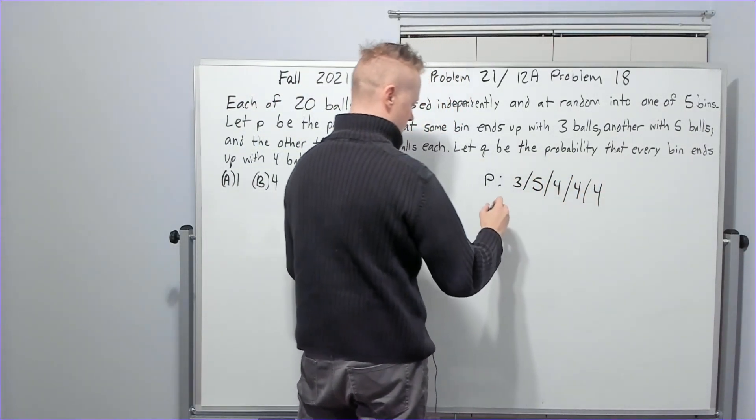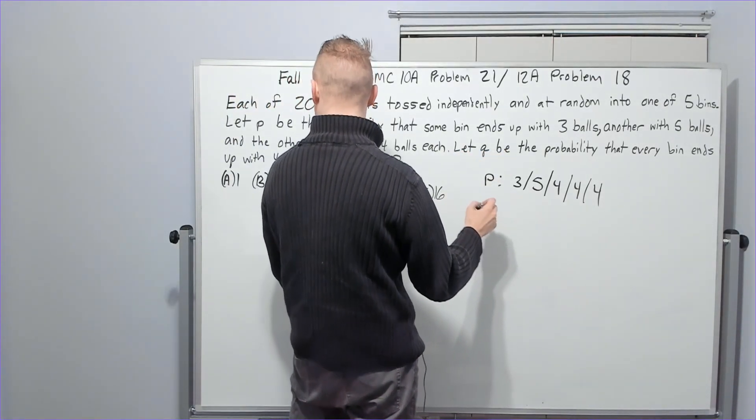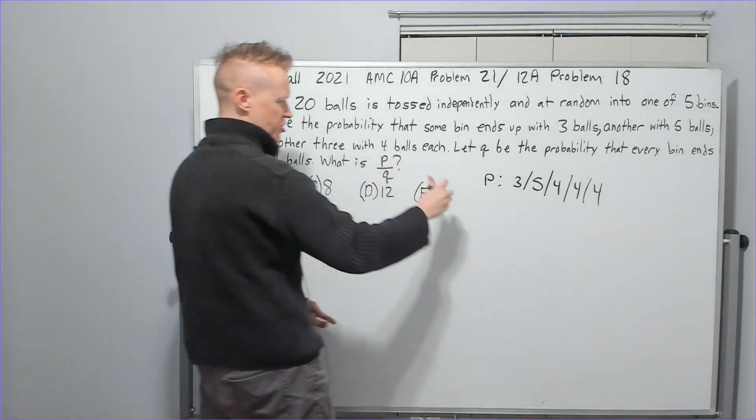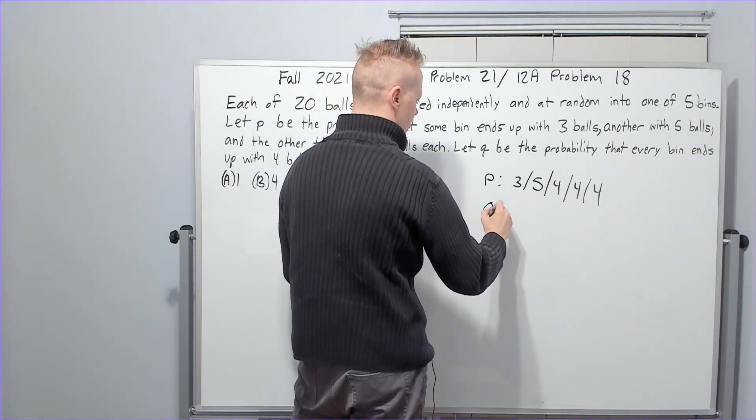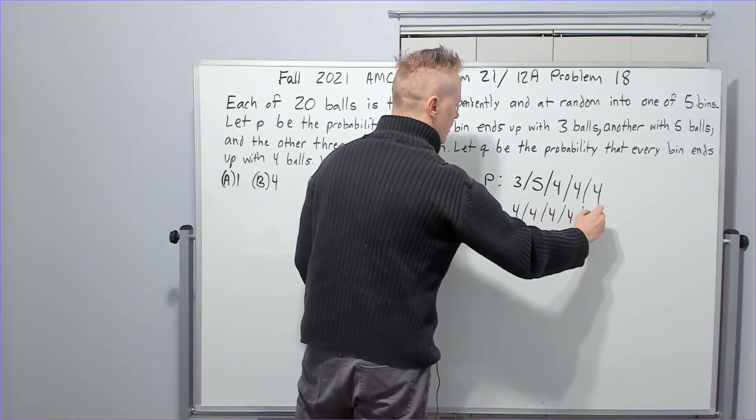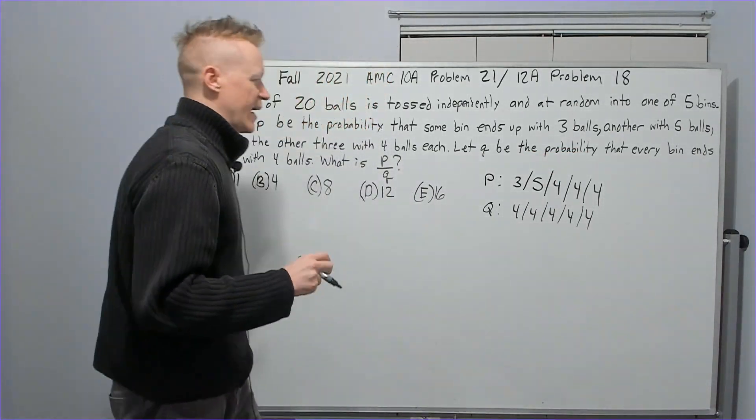Each of 20 balls is tossed independently and at random into one of five bins. Let P be the probability that some bin ends up with three. So P is going to have a bin with three, another with five, five, and the other three with four balls each. So I wrote this on my paper.